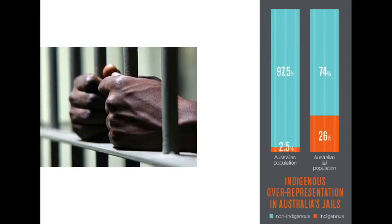One cause of poverty is the high imprisonment rates for Indigenous Australians, believed to be largely due to racial views. Indigenous Australians are 14.8 times more likely to be imprisoned than a non-Indigenous person. When you consider that Indigenous Australians make up only 2.5% of the population yet account for 26% of the prison population, it is clear there is a significant issue. If a large number of Indigenous families have even one member imprisoned, it dramatically affects their household income.